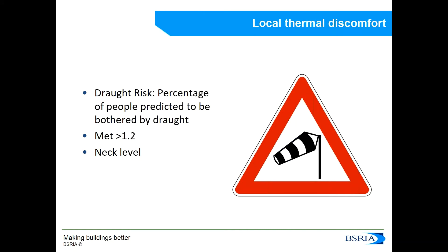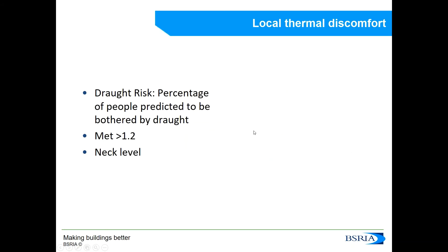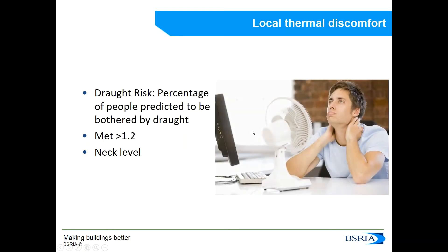We can feel satisfied or unsatisfied with the environment taking into consideration the body as a whole, and this is where PMV and PPD are important. But we can also have local discomfort — for example, if we feel a cold draft of air blowing down our neck because we are in the proximity of two supply grilles that are clashing with each other. The draft risk calculates the percentage of people who are likely to be bothered by a draft, and this is normally when the metabolic rate is less than 1.2 and is normally felt at neck level. If we are in a very hot office and put on a fan, we would certainly be feeling a draft but would probably find it quite comfortable.